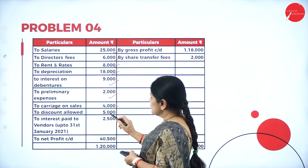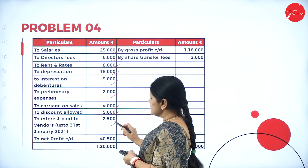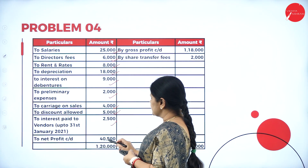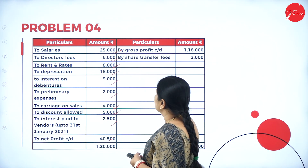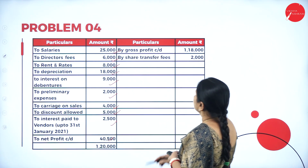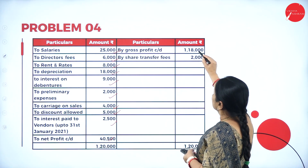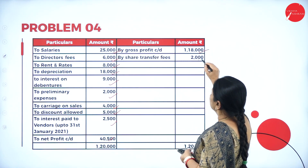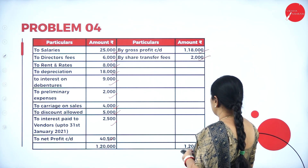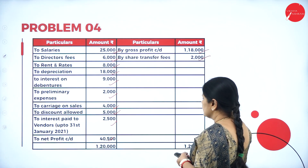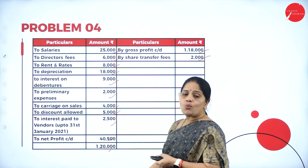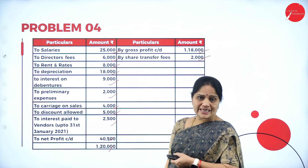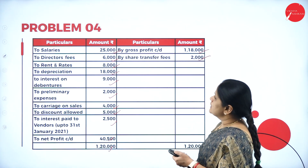Further items include carriage on sales, discount allowed, interest paid to vendors, and net profit carried down. Then by gross profit and by transfer fees. The total for both sides is 1,20,000.